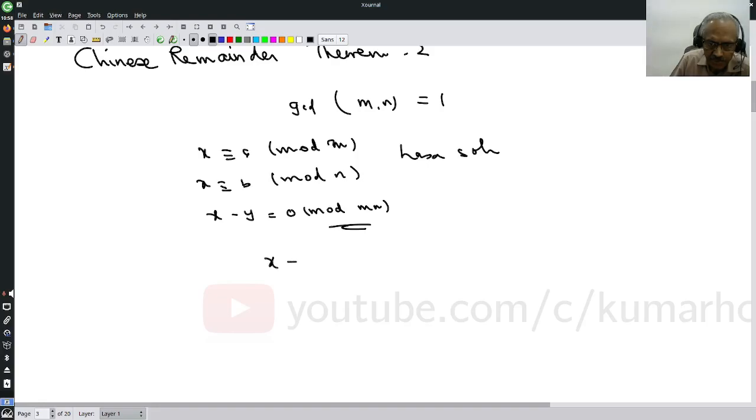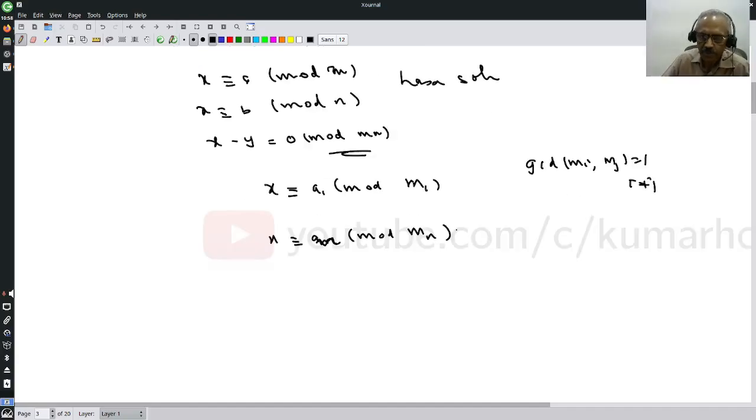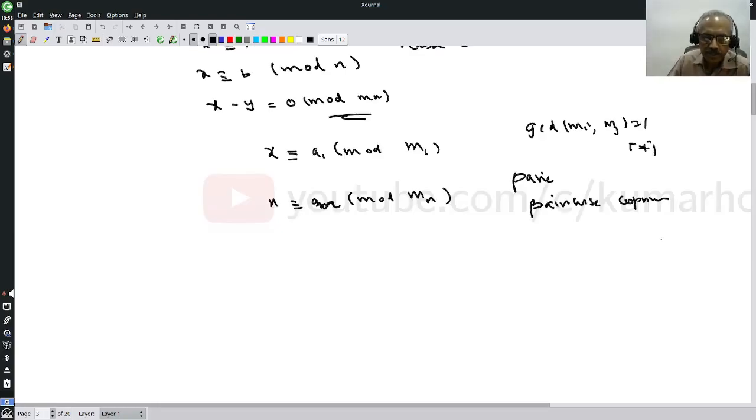Now we are looking at the following equations: x is congruent to a1 mod m1, x is congruent to a2 mod m2, up to x congruent to an mod mn. Let us also assume the GCD of mi and mj is 1 if i is not equal to j - they're pairwise co-prime.